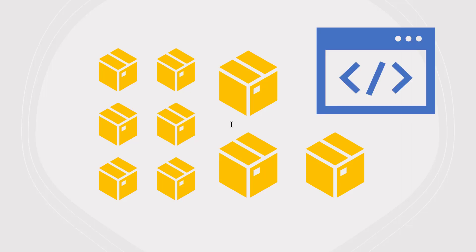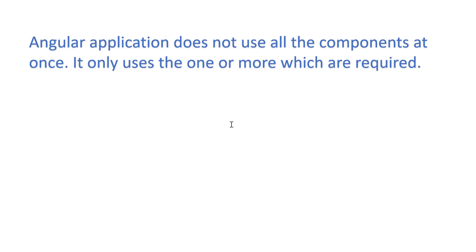In any Angular application we generally have multiple components and modules rendered on the browser. But by default, not all of them get rendered at once. When the Angular application starts rendering, it only uses those components that are required in the DOM. For example, if our application has multiple modules and components — like in our bookstore application — running it in the browser doesn't mean all components render at once.